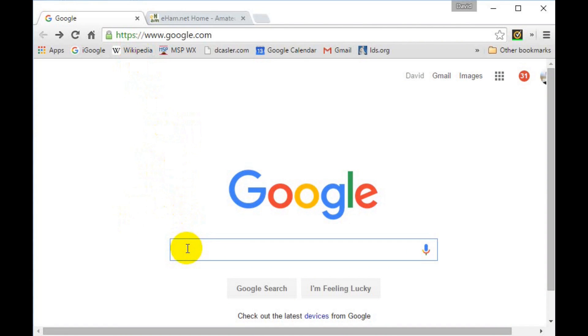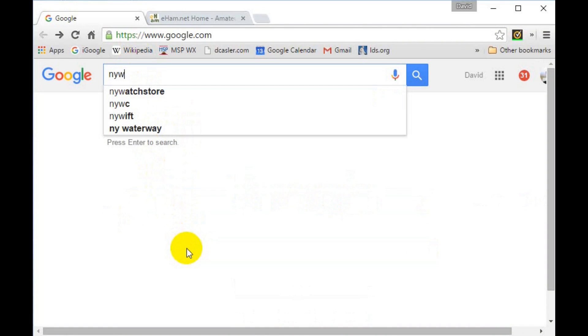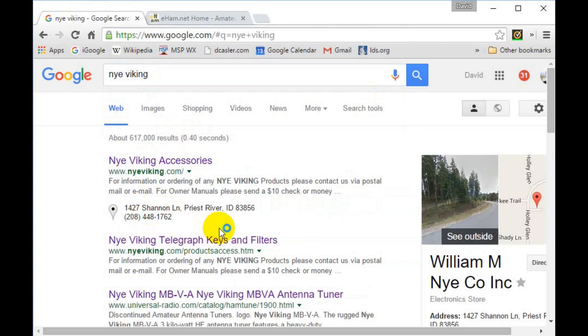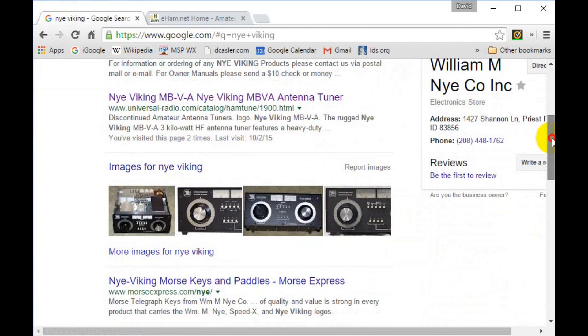In this case I'll use Google. Let's search on Nye Viking and see what we get. Hmm. The first couple are about telegraph keys, but the images certainly show an antenna tuner.